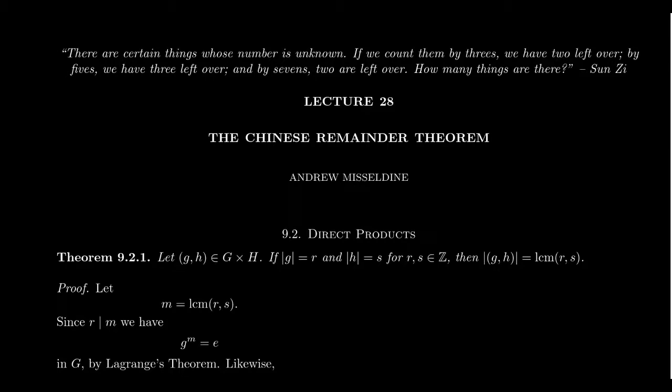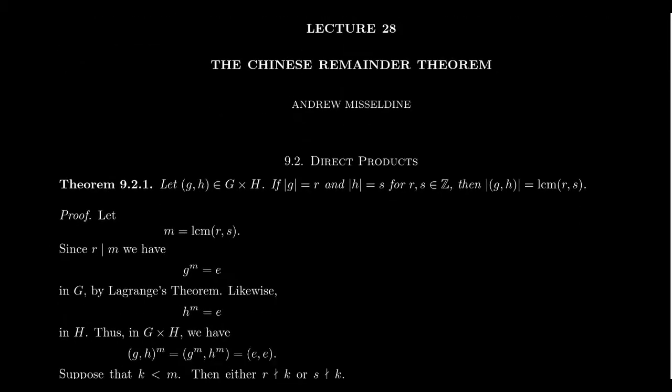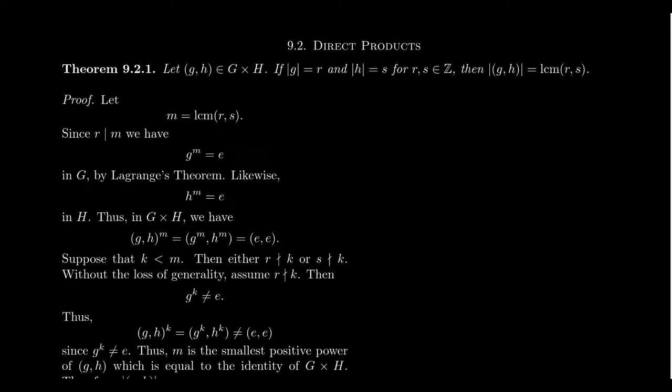Formally, in our series, we defined direct products a long time ago, but this is the official location in Judson's textbook. What I want to do in this video is prove a very useful statement about the order of direct products. In particular, suppose we have the direct product of two groups, G times H. And if we pick an arbitrary element of G times H, let's call it (g,h). If we know the orders of the two terms in the ordered pair,